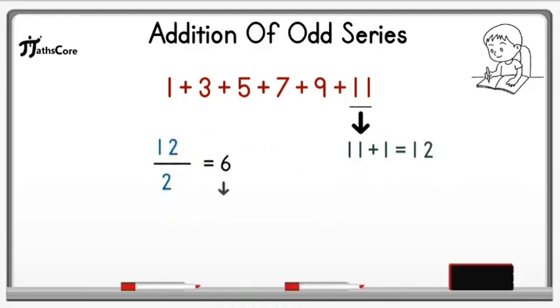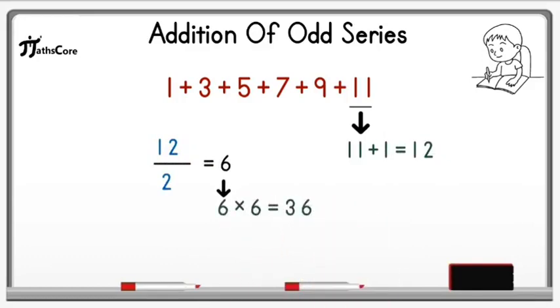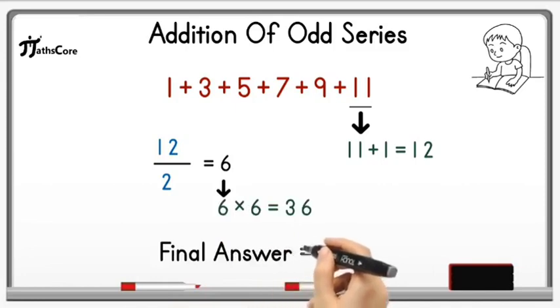Now in the next step we have to multiply this 6 with itself. So 6 multiplied by 6 is equal to 36 and the final answer is 36. If you add all these odd numbers together then you will get 36.